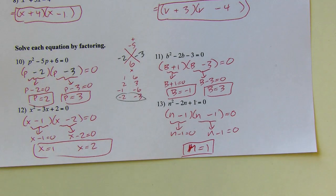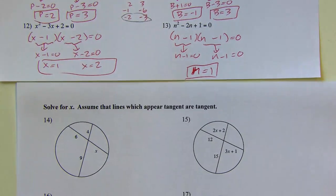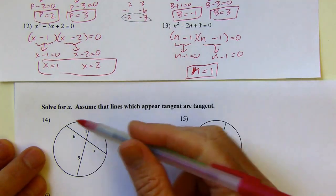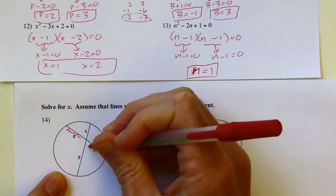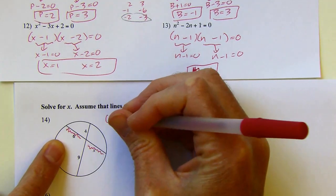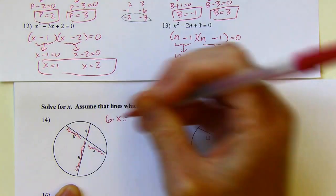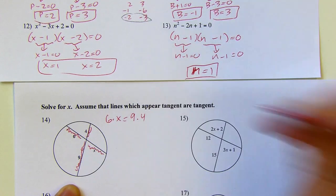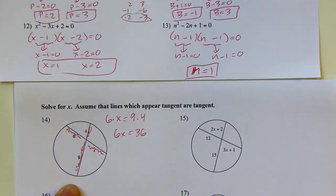It's important to know how to factor and solve by factoring because it comes up in this section. Now let's head to the second side. We've got a circle with two chords that meet inside the circle. When this happens, each chord is cut into smaller segments — like the 6 and the X here. The product of those two pieces is going to equal the product of the two pieces of the other chord. So 6X equals 36, and dividing by 6, X equals 6.